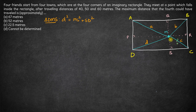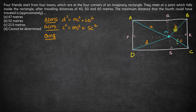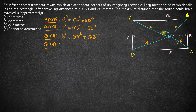Similarly, in triangle CMS, CM is the hypotenuse, so C² = MS² + SC². Next, in triangle QMB, B is the hypotenuse, so B² = QM² + QB². Finally, in triangle QMA, A is the hypotenuse, so A² = QM² + AQ².